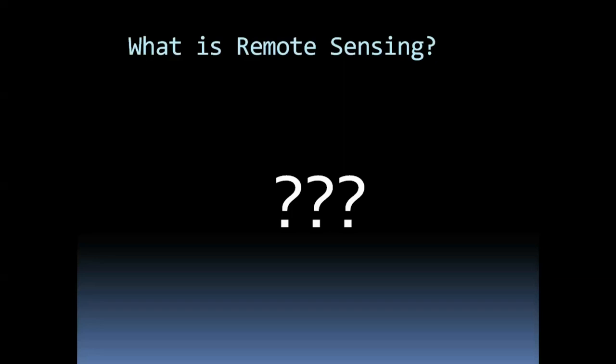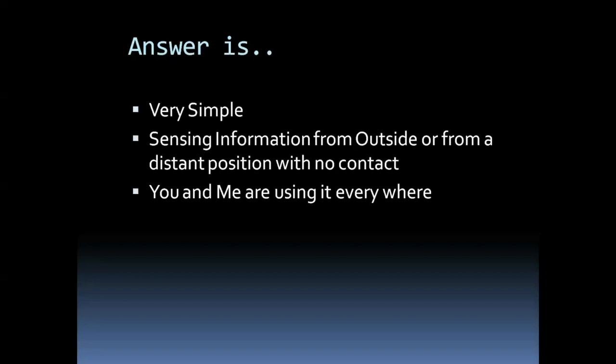Remote sensing is sensing information from a distant position with no contact. If you want to get information about any object, you need not touch it. You can stay in India and get information about an object located in France or Germany without touching it — that is remote sensing.